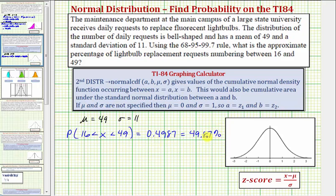In the previous example, when we used the empirical rule, we came up with forty-nine point eight five percent, and the difference is the calculator is a little more accurate.